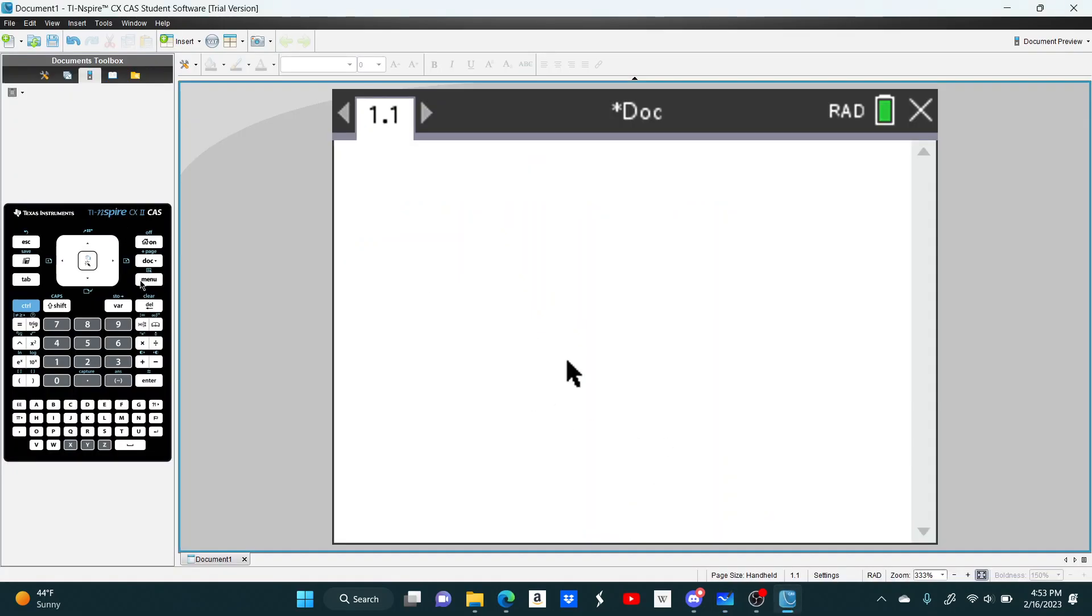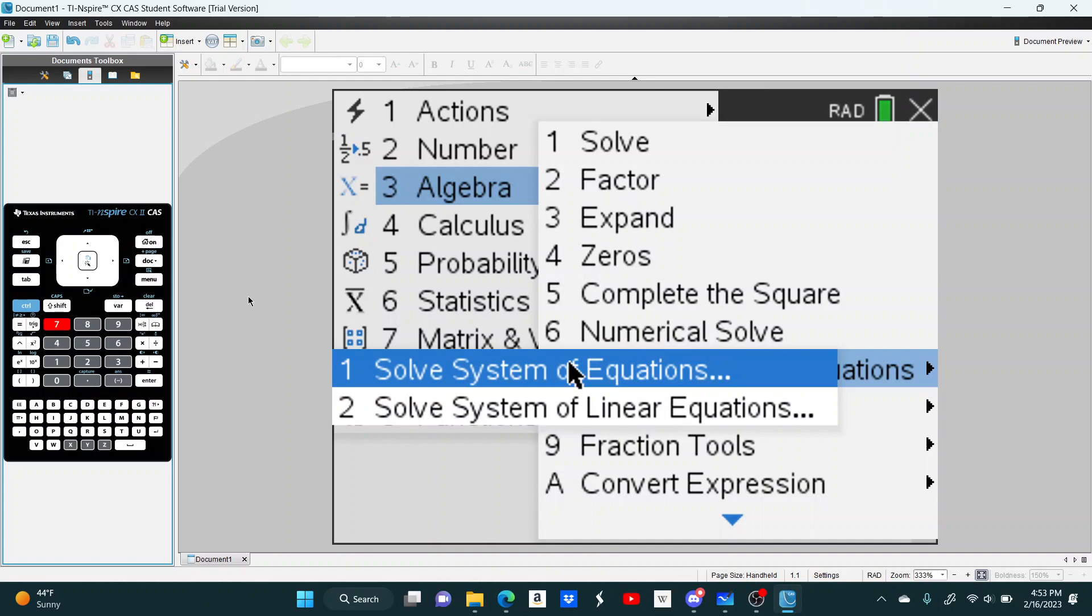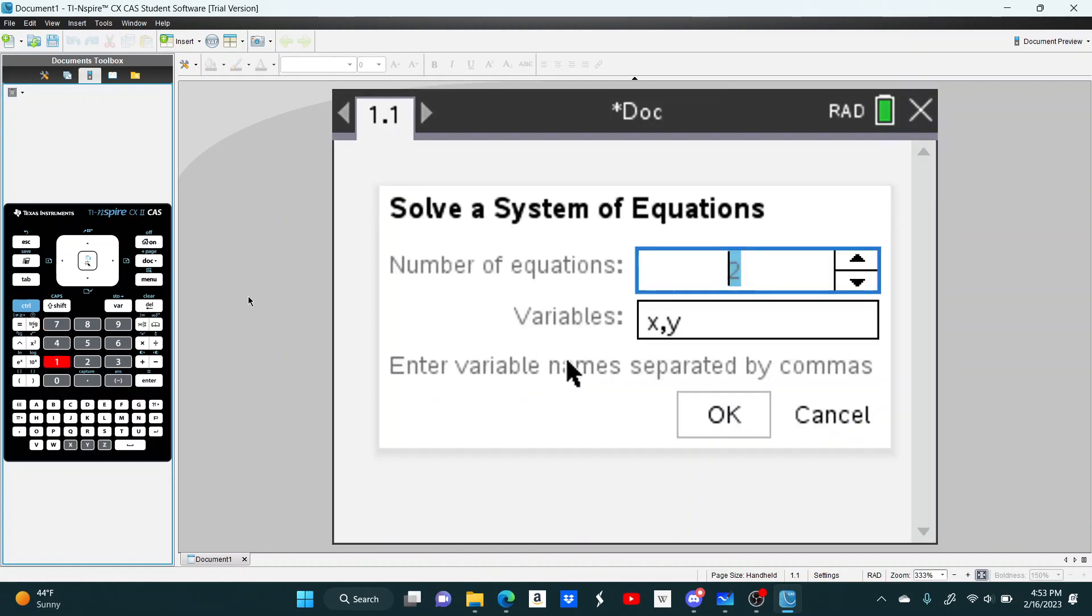So you go to your TI-Nspire, or whatever calculator you're using. You go to Algebra, and then on this specific calculator, you go to Solve System of Equations, and then you click 1. So in this case we have three equations, and our variables are A, C, and D.